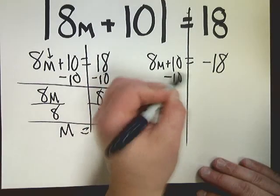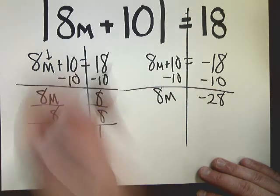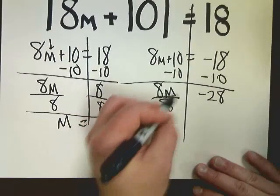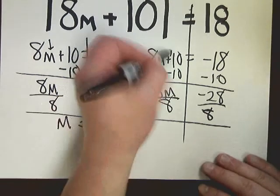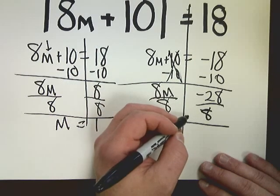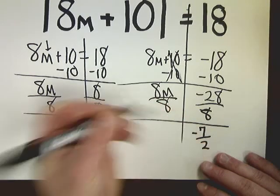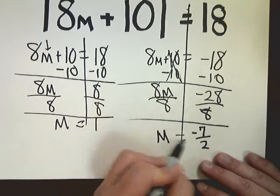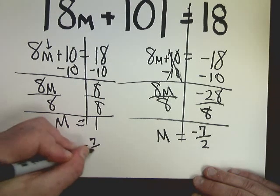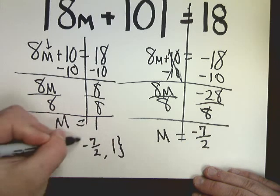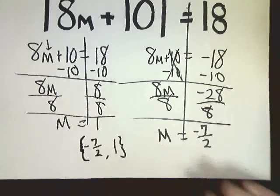On the flip side of that, I need to subtract 10. This gives me negative 28. I'm going to divide by 8 here. Divide by 8 here. These cancel. This should give me negative 7 over 2, which is negative 3.5. So for my answer set, I need negative 7 over 2 and 1. I tend to put them in numeric order. So the littlest one is on the left and then on the right.